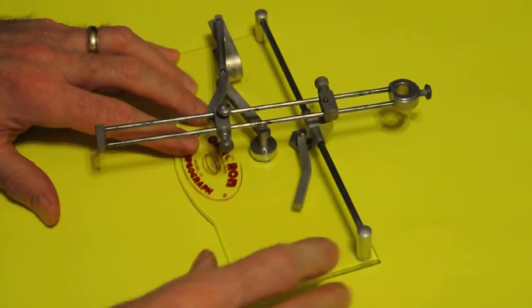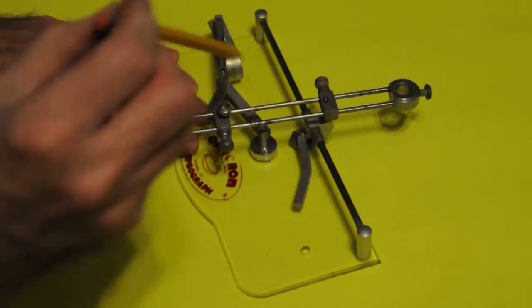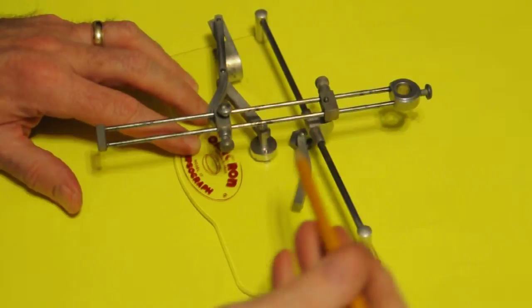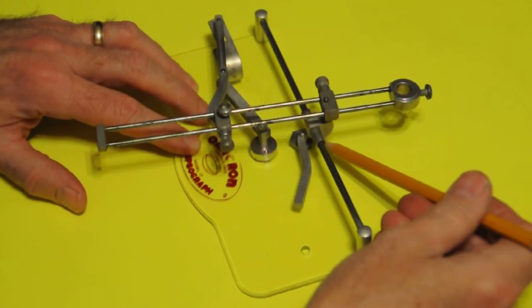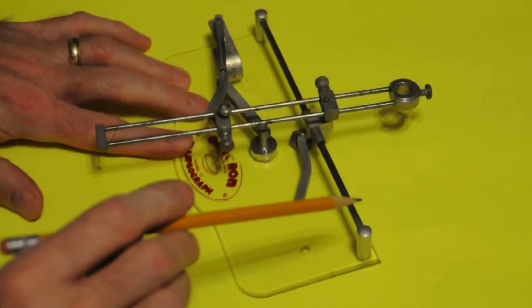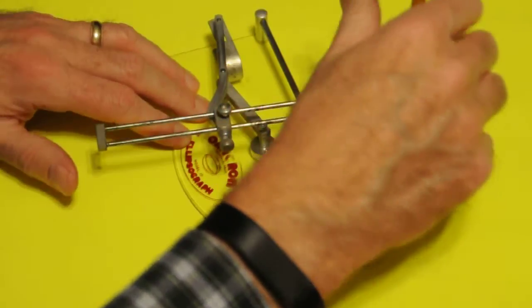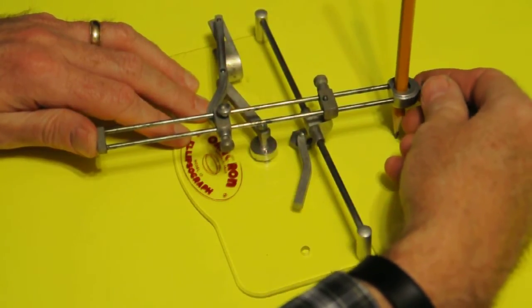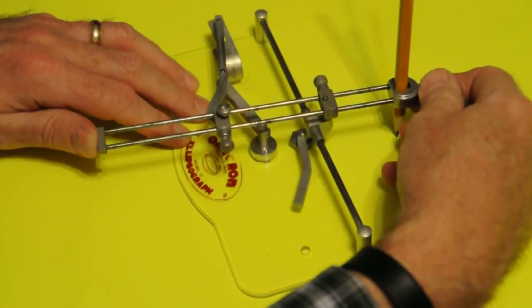So let me demonstrate. I have a pencil here. I will put it down in there. By the way, there's also a little pen that sticks right down in there that sort of holds the thing in place. As you'll see in a minute, I'll actually use that to rotate around because you can only draw half of an ellipse without rotating.